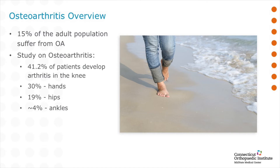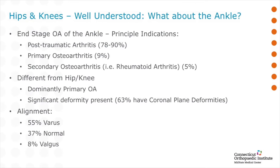Did you know that 15% of the population, or about one in every six people, have some form of arthritis? You probably know someone who's had their hip or knee replaced because it's a very common surgery. Ankle arthritis is a little bit less prevalent, but obviously if you have it, it's a very important problem with a direct effect on your way of life. A lot of ankle arthritis is a direct result of trauma — either you sprained your ankle a lot growing up or you broke it 15 or 20 years ago.